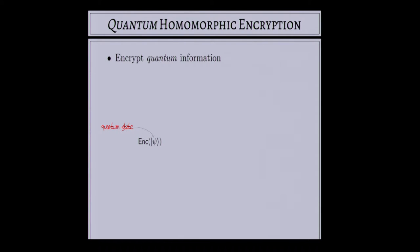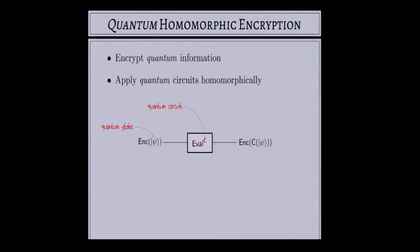Without getting into too many details, what I mean by a quantum state is that to fully describe certain systems — like the state of a photon — you need a richer description than you would require for describing a random variable. We'd like to encrypt some quantum state, and we'd like to apply quantum circuits homomorphically. Just like a classical computation, a quantum computation can be described as a circuit — a sequence of gates from some finite gate set — but now the gates will be quantum gates.